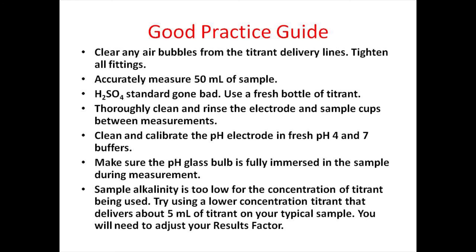An accurate titration should use between 0.5 mL and 10 mL of titrant. If you consistently use less than 0.5 mL of titrant, you may want to consider changing the concentration of titrant, which also requires changing your results factor. The procedure for changing your results factor is described in a second video. Keep in mind good laboratory practice guidelines by accurately measuring 50 mL of your sample, calibrating using fresh pH 4 and pH 7 buffers, and making sure the pH glass bulb is fully submerged into the sample for an analysis.